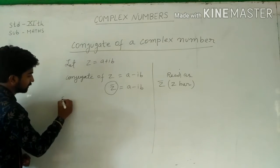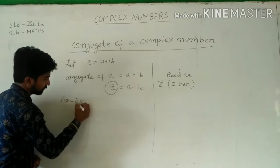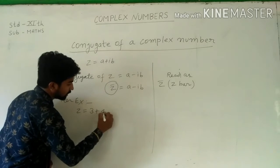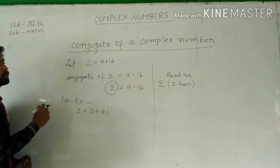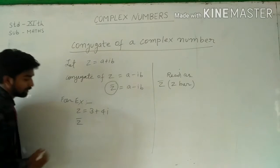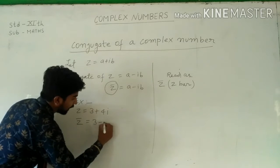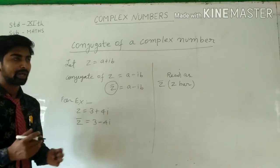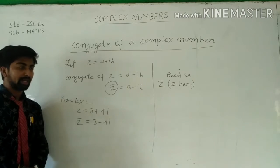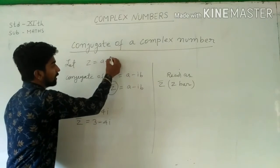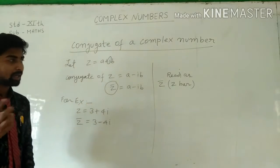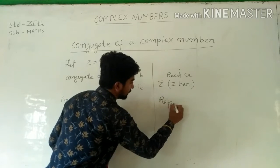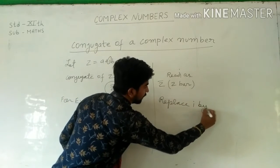For example, let z equal to 3 plus 4i. Then the conjugate of z, that is z-bar, equals 3 minus 4i. It is very simple. To find the conjugate of a complex number z, we have to replace i by minus i.